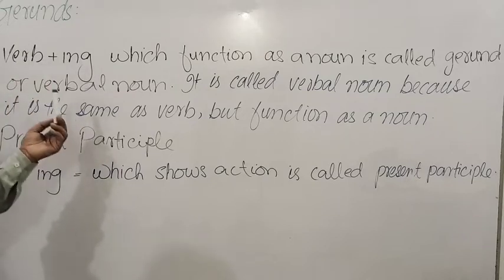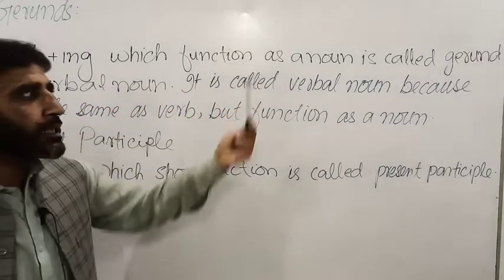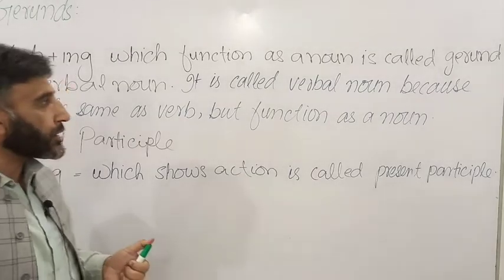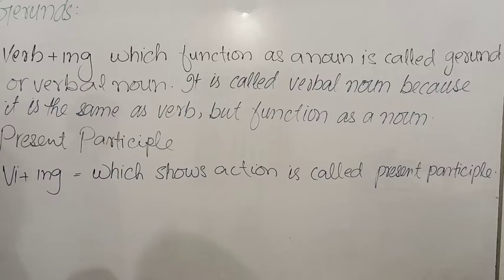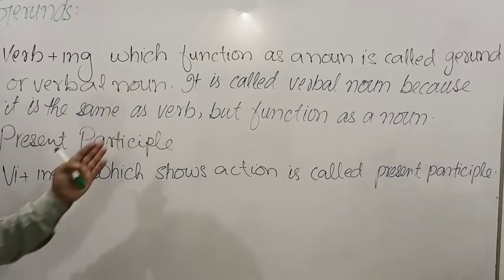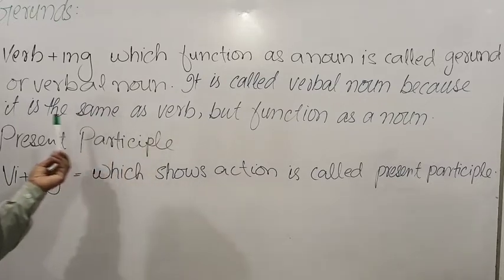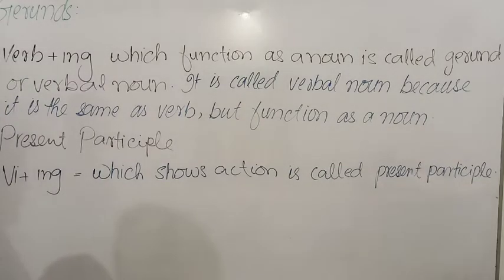Let's first define it and then we will explain it. So verb first form plus -ing, which functions as a noun, is called gerund. It's also called verbal noun. It is called verbal noun because it looks like a verb, but actually it functions as a noun.